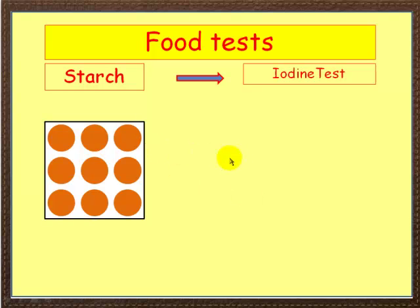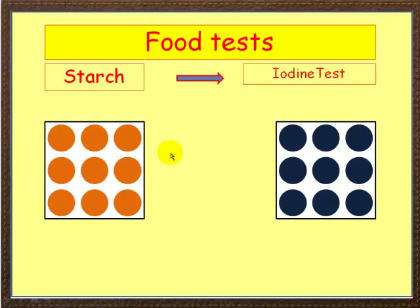Starch. For starch, we test using something called iodine. Iodine is normally a yellowy-brown color, but if you add it to starch, it goes bluey-black. So the positive result for starch is a blue-black color.